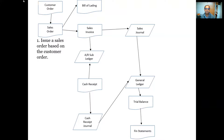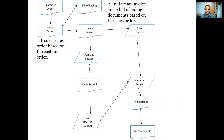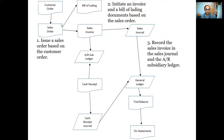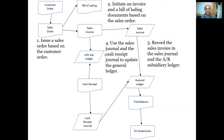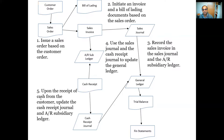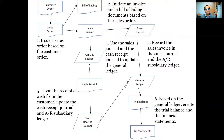The first step is making the sales order from the customer order. The second step is initiating the invoice and the bill of lading — so from the sales order we make the bill of lading and the sales invoice. The third step is recording the sales invoice into the sales journal, then the general ledger. Then we use the sales journal and cash receipt journal to update the general ledger. Then we receive cash from customers, update the cash receipt journal, and finally make the financial statements. This shows in a simple way how to make a flowchart using Microsoft Word.